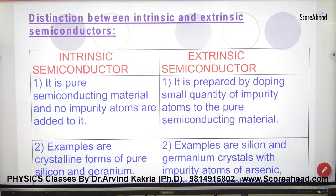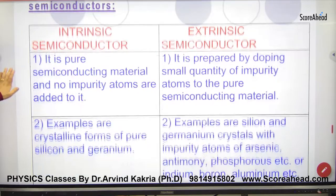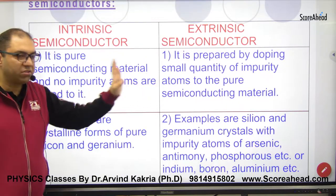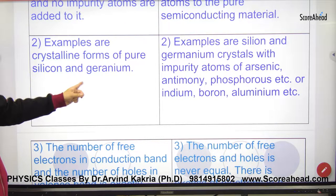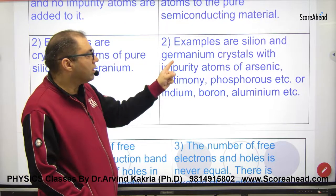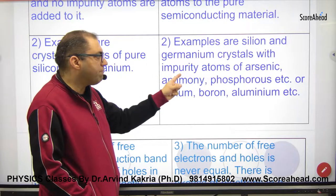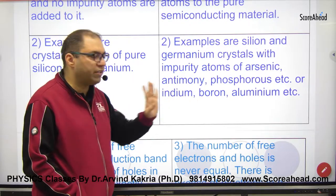Distinction between intrinsic and extrinsic semiconductors. We have done the major points. Intrinsic is pure semiconductor, extrinsic is impure semiconductor. Examples are pure silicon and pure germanium for intrinsic. Examples for extrinsic are silicon and germanium with impurity atoms like arsenic, antimony, phosphorus, etc.